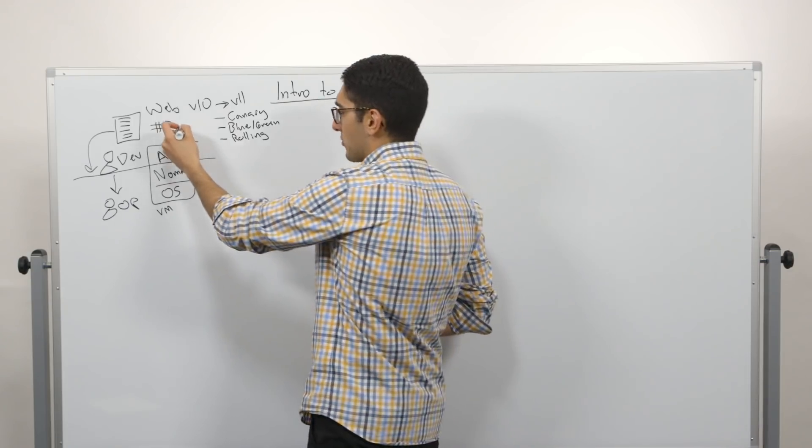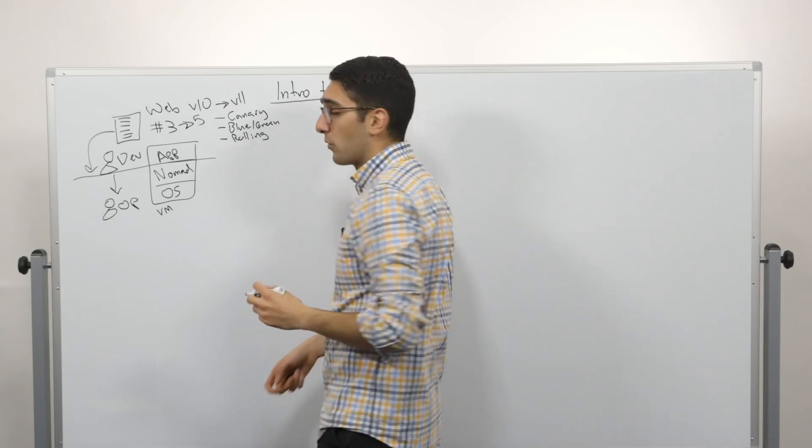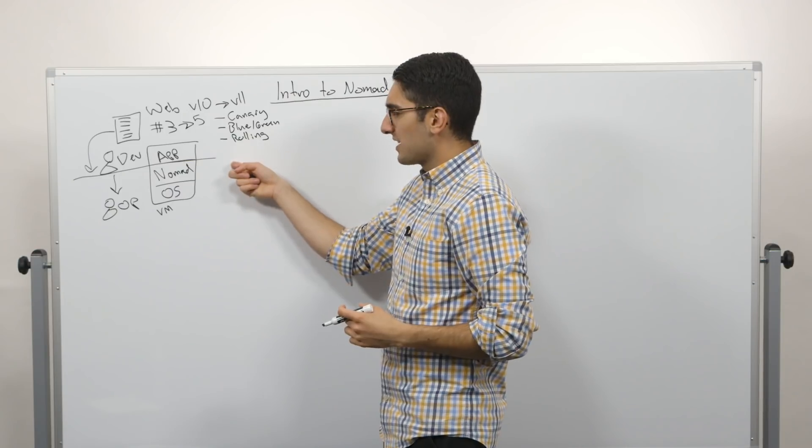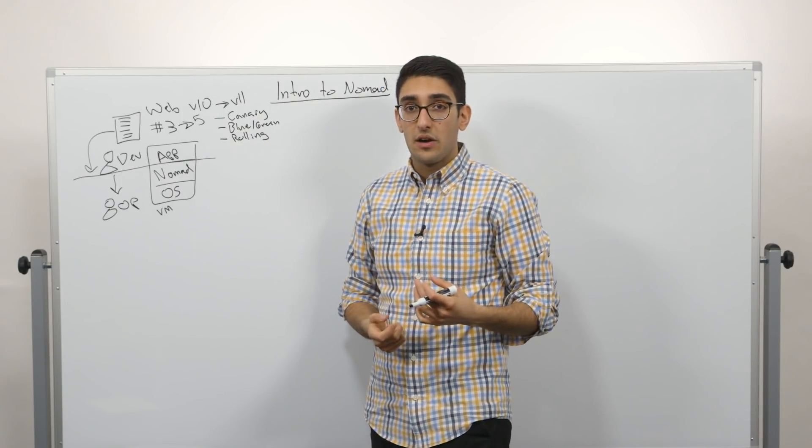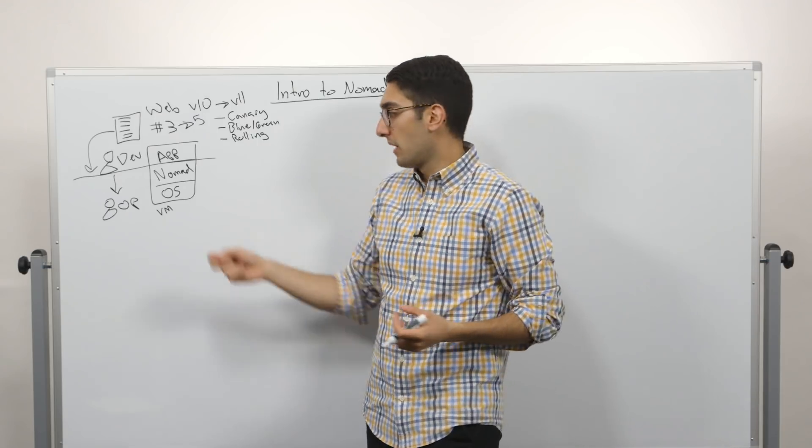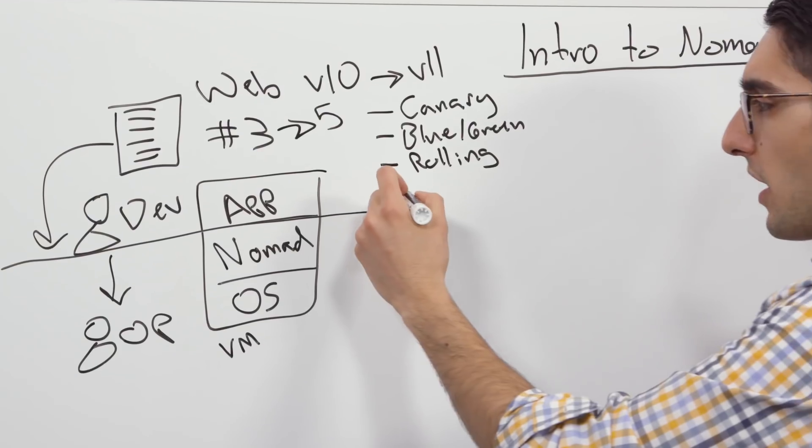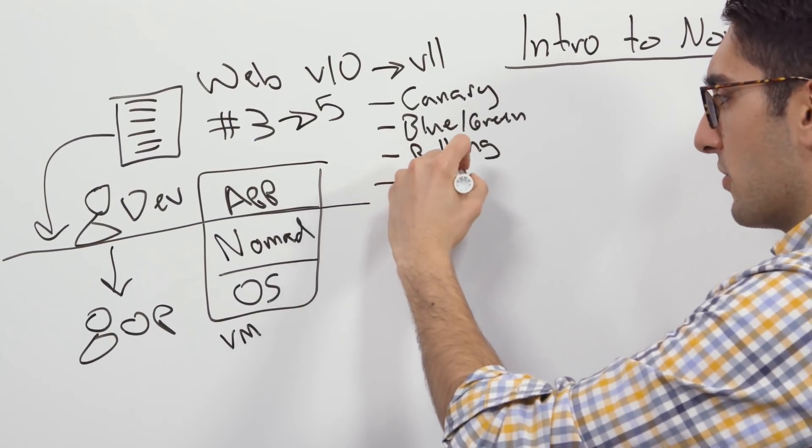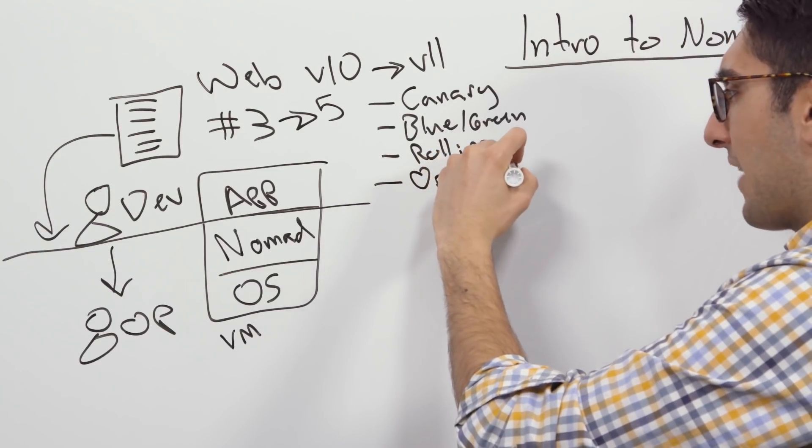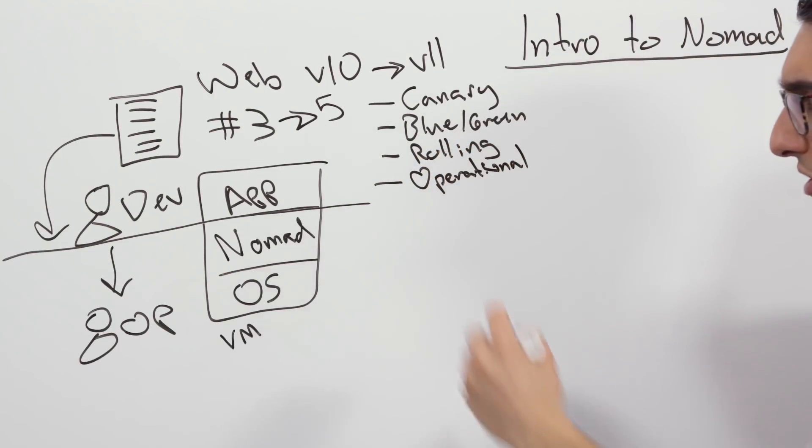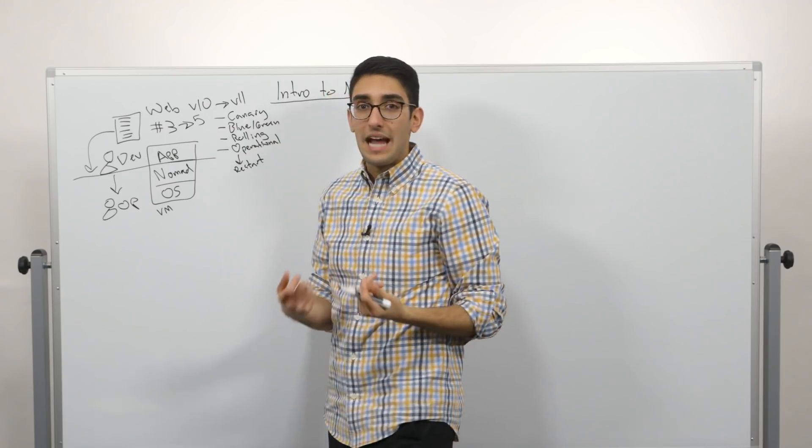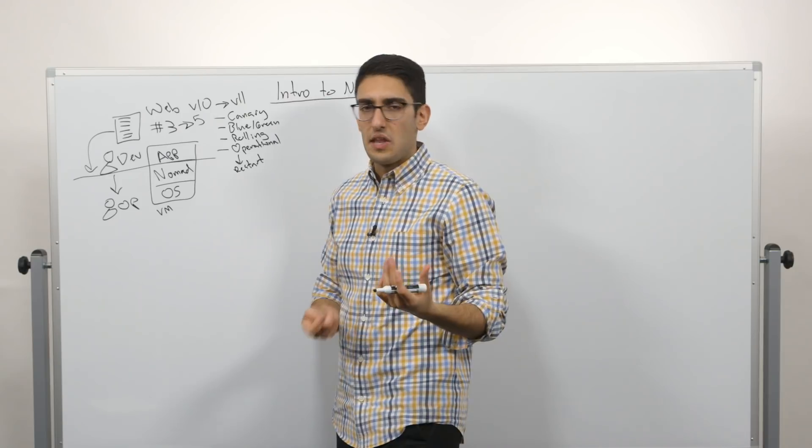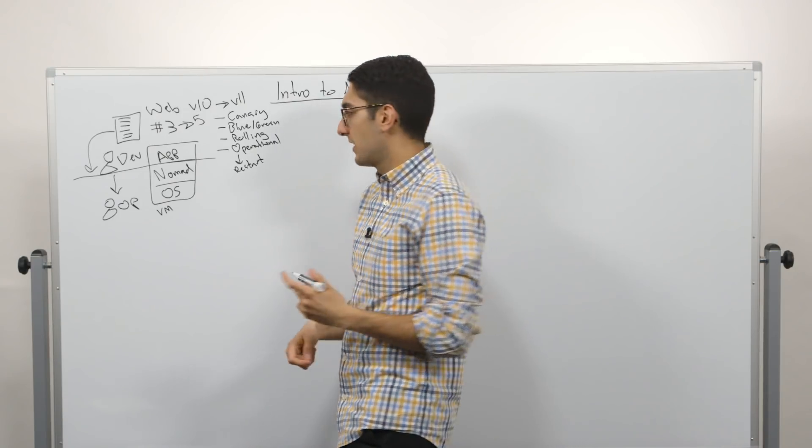So we could easily come in here and just change three to five and Nomad will go run two more copies of this. The other thing it really does is how do we automate some of the operational challenges that are historically part of the operations group. And so when we talk about these sort of operational issues, it's things like how do we make sure if this application crashes that it gets restarted? So we want to make sure we can gracefully restart the application and ensure it stays online even though it might have crashed or experienced an issue.